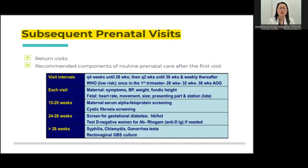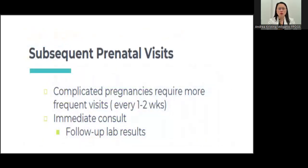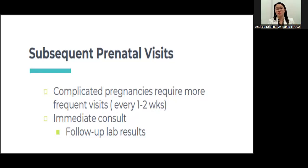After 28 weeks, screen again for syphilis and chlamydia if the patient is high risk, and perform GBS screening. For subsequent visits, the intervals described are for low-risk patients. If your patient is high risk, you have to see her more often — every one to two weeks. The first visit is critical to determine whether you are dealing with a high-risk or low-risk patient, which will guide how often you need to see her.